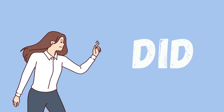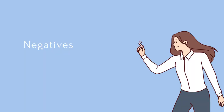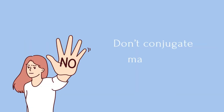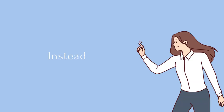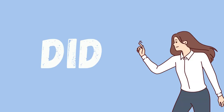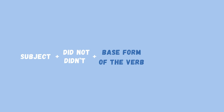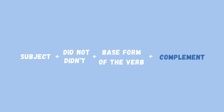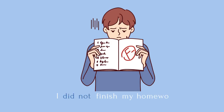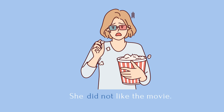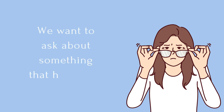The key is 'did,' because in negatives and questions we don't conjugate the main verb. Instead, we introduce our helpful friend 'did.' Here's the basic structure: subject + did not (or didn't) + the base form of the verb + the complement. Examples: 'I did not finish my homework.' 'She did not like the movie.' 'They did not travel to France.'